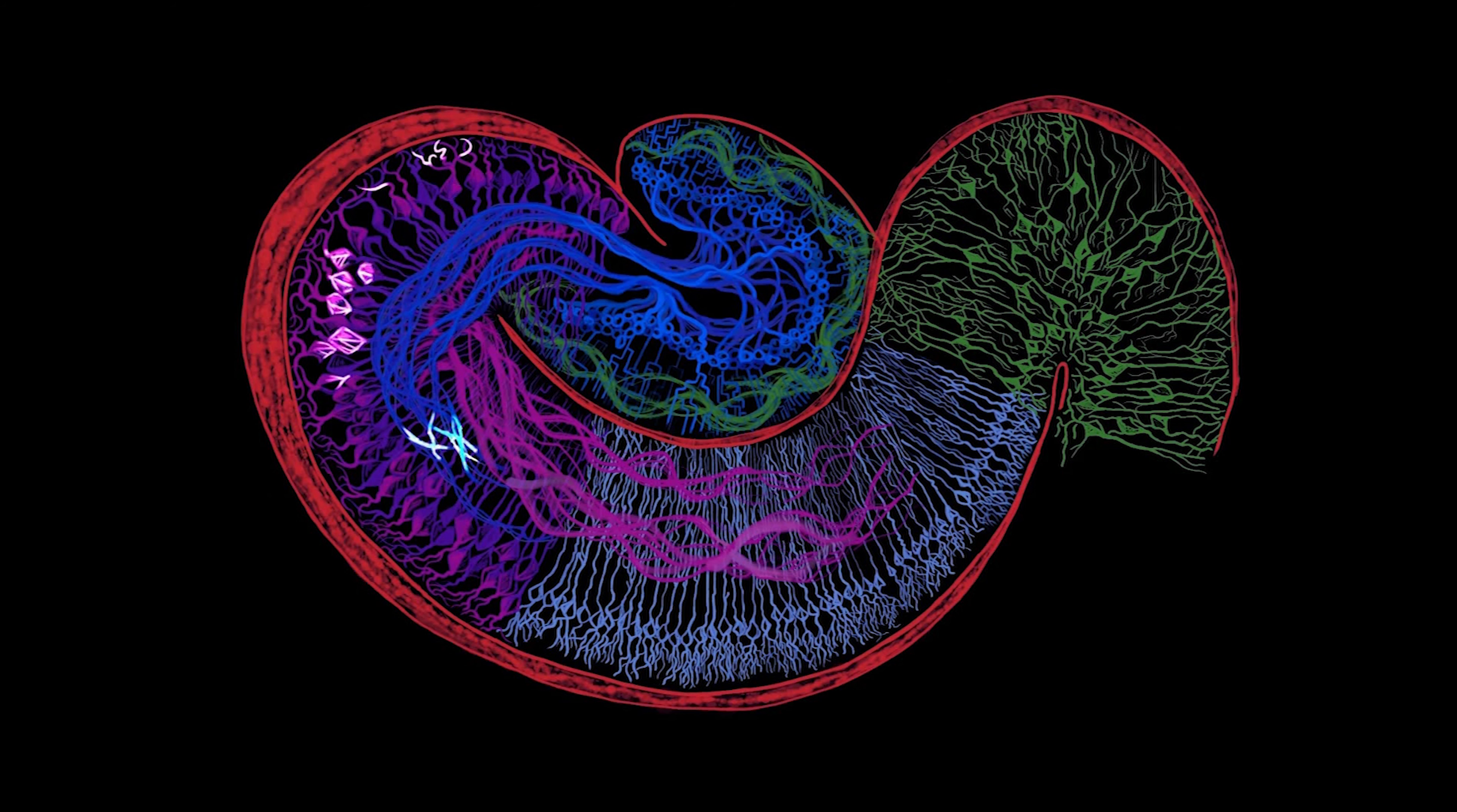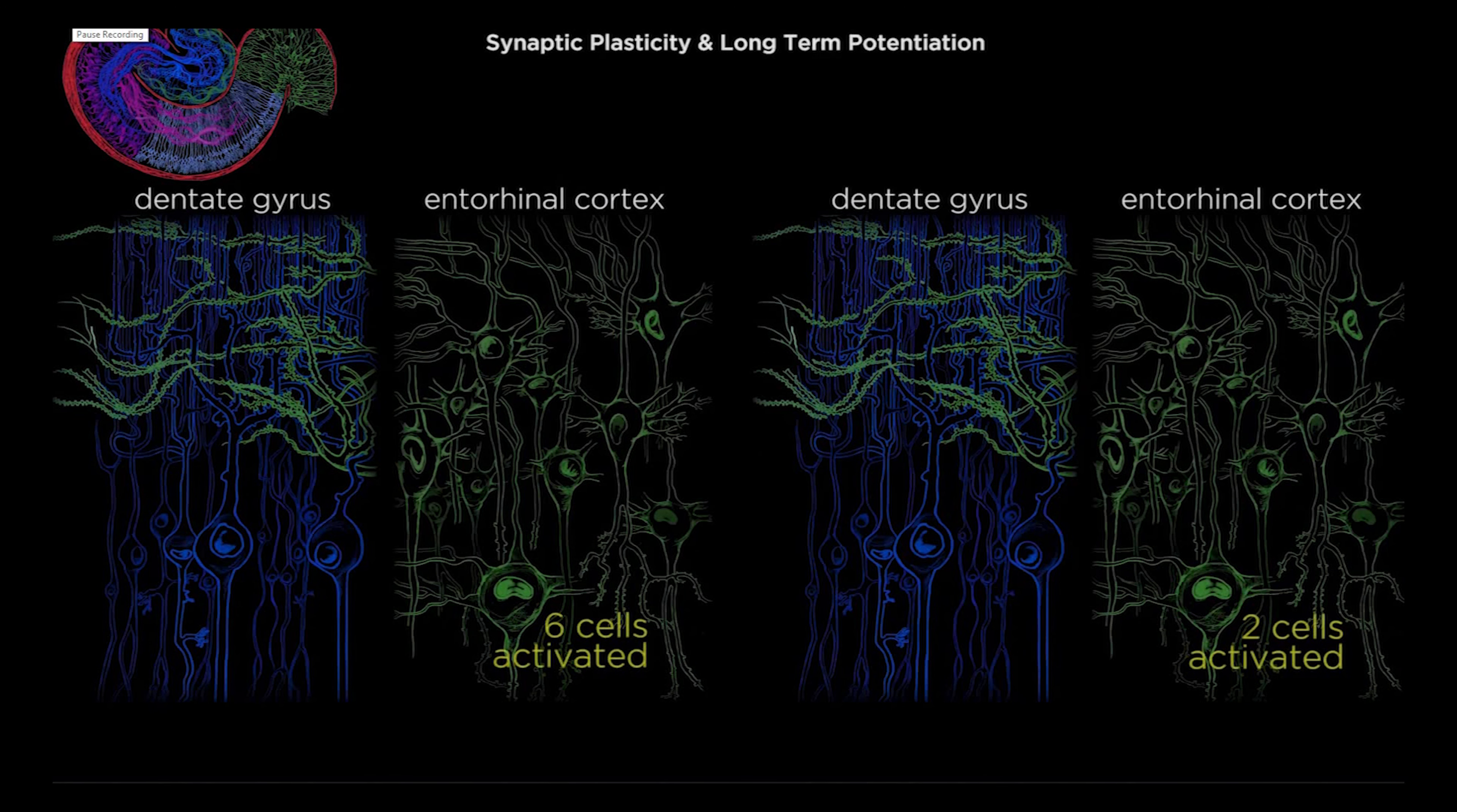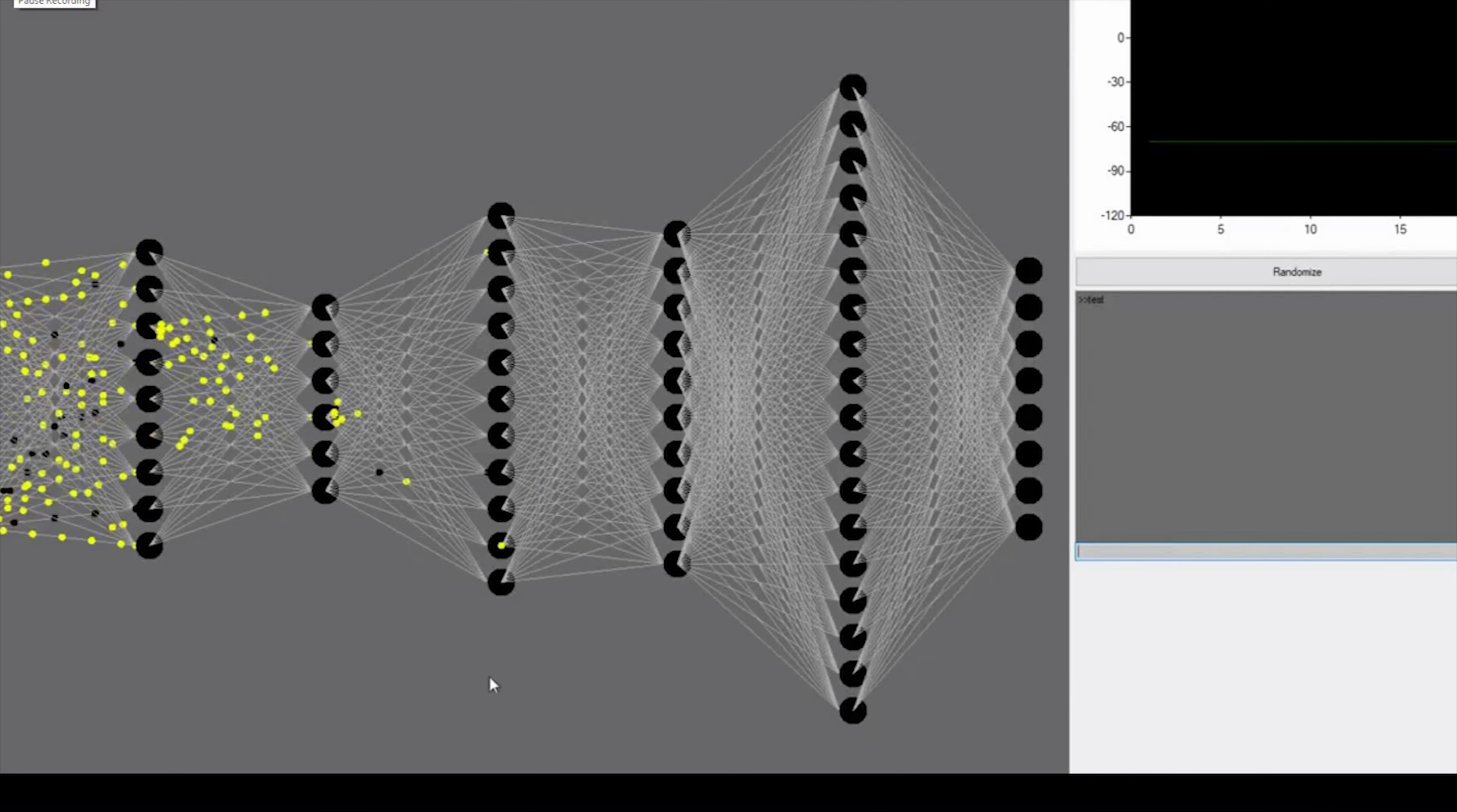Geoffrey Hinton et al. in 2006 proposed learning a high-level representation using successive layers of binary or real-valued latent variables with a restricted Boltzmann machine to model each layer. In 2012, Ng and Dean created a network that learned to recognize higher-level concepts such as cats only from watching unlabeled images.